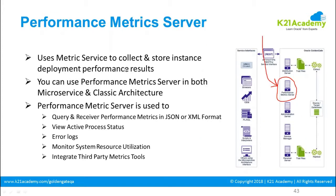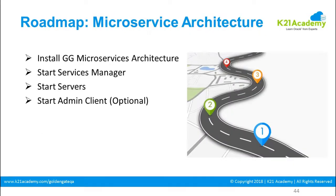The performance metrics server uses a metric service to collect and store instance and deployment performance results. You can use the performance metrics server in both microservices and classic architecture. You can view error logs, active process status, and integrate third-party metrics tools as well. The roadmap to microservices architecture is: install microservices architecture, start service manager, start the servers, and start your admin client. Once your configuration is done, your journey to the microservices architecture can begin.